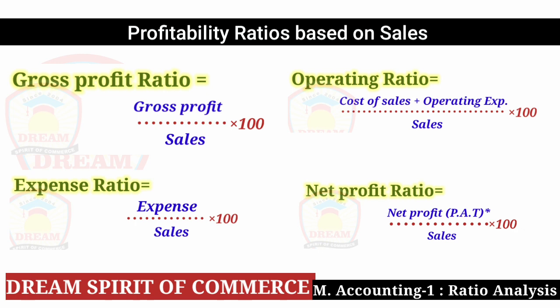The Sales figure to use should be: Cash Sales plus Credit Sales minus Sales Return. Friends, in Profitability Ratio Based on Sales we checked 4 ratios: first Gross Profit, second Operating, third Expense, and fourth Net Profit. One thing common in all four ratios is that all are divided by Sales and multiplied by 100.